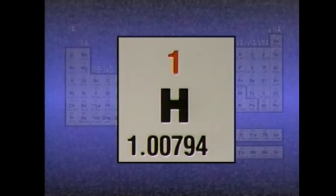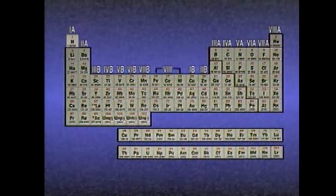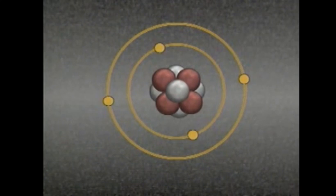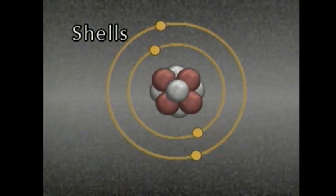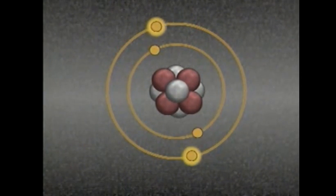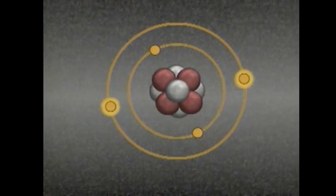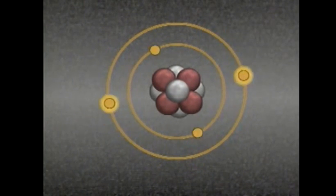In an atom, electrons orbit around the nucleus at different levels. These levels are often referred to as shells. The electrons in the outermost shell are called valence electrons. Valence electrons are important in chemistry because they affect every chemical reaction that occurs.